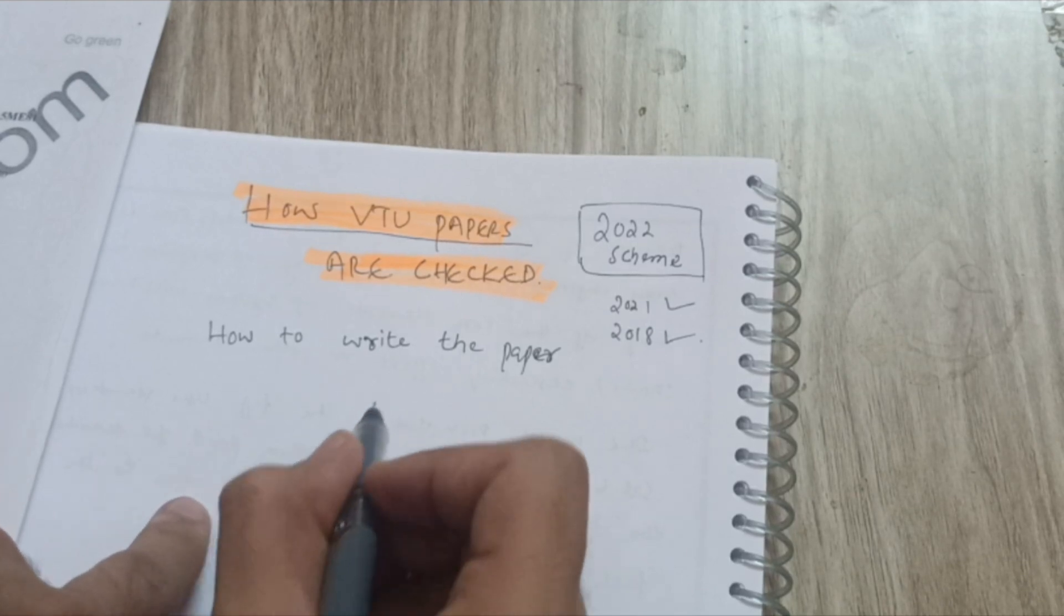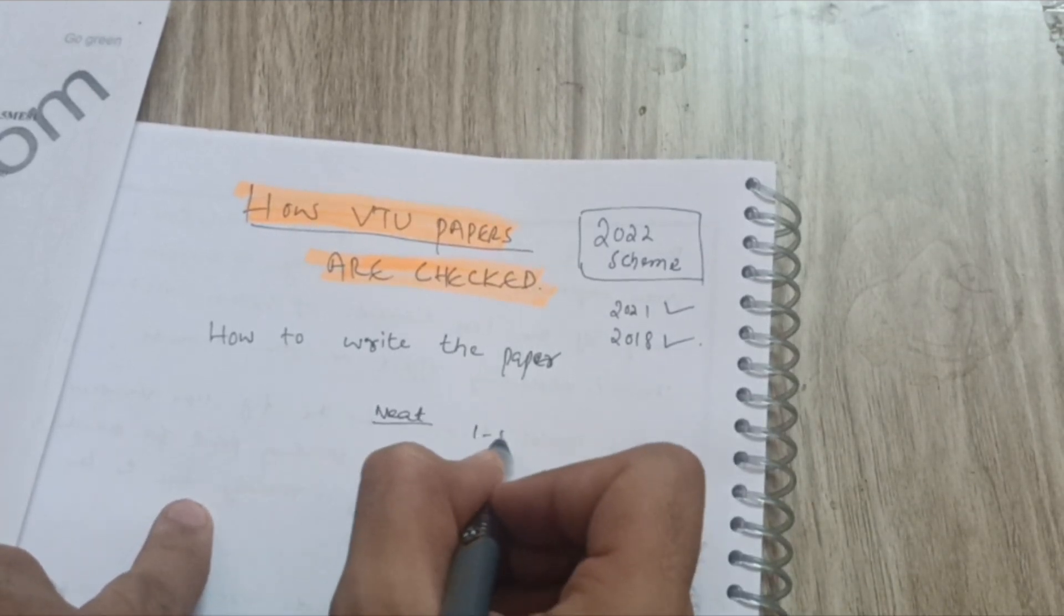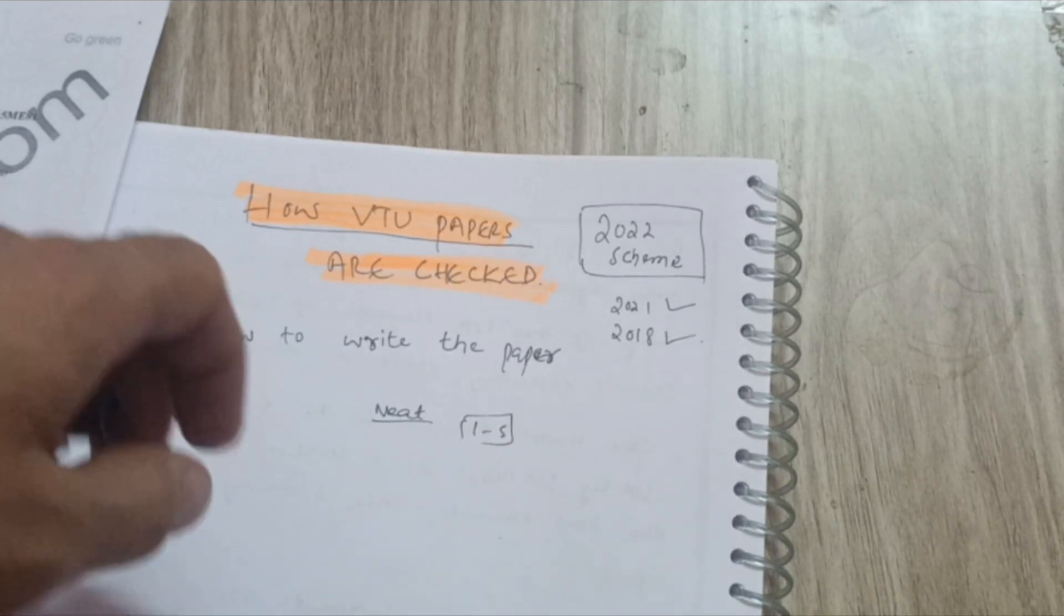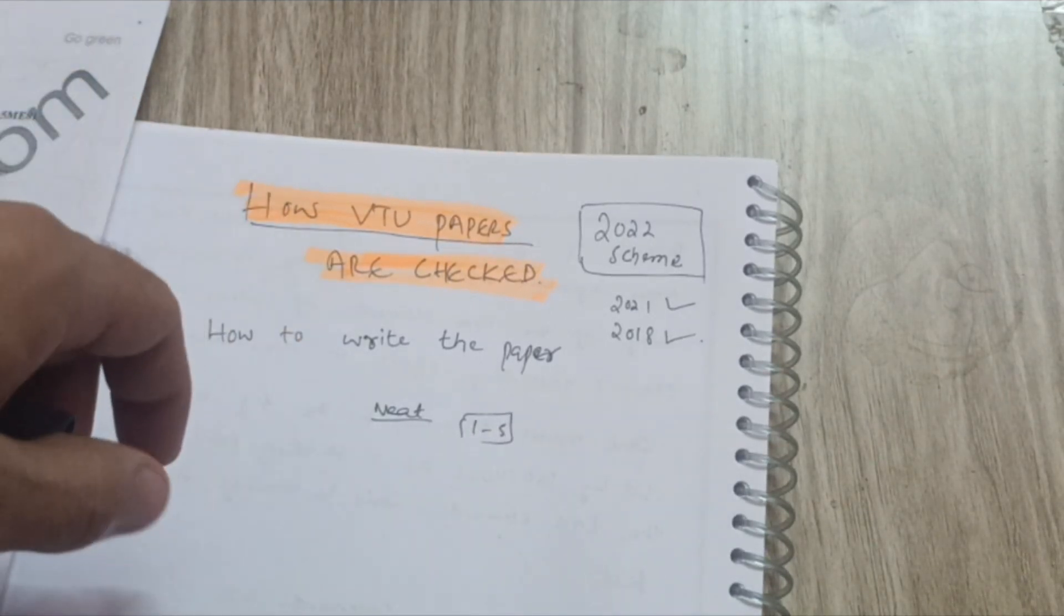Next point is you should write first five pages very neat over there. So neat first five pages should be there. If you write neatly, evaluator will understand that he knows the concept very well.